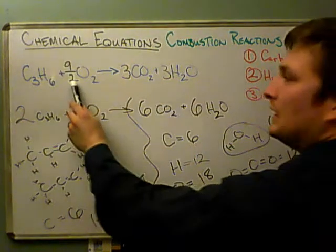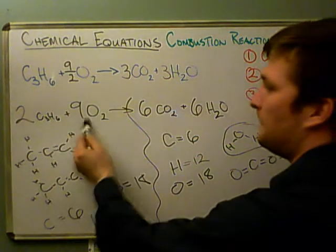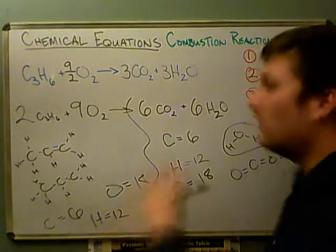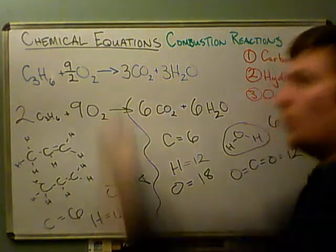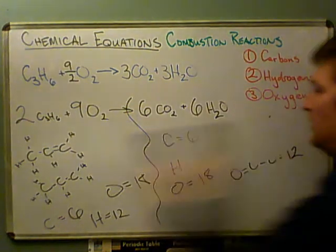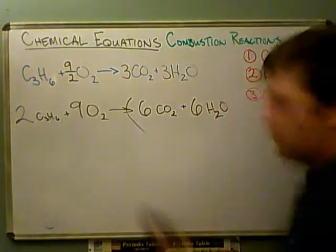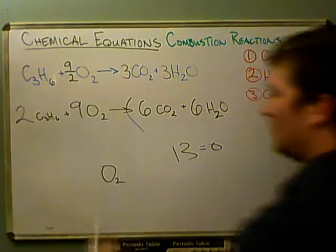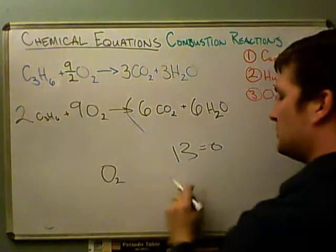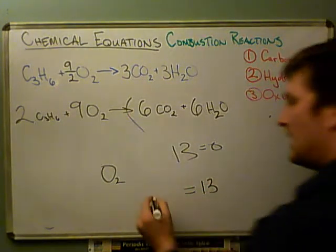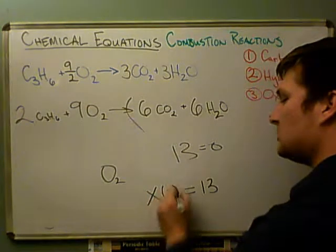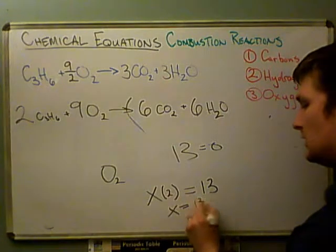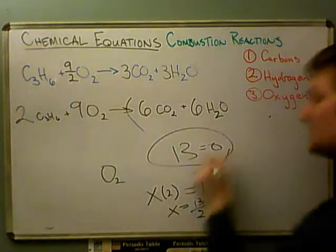So when you run into something like this, make sure you get everything down to single integer coefficients — integers are counting numbers like one, two, three, four. And don't worry when you end up with an odd number of oxygens to balance. For example, if you counted thirteen oxygens needed and you only have O₂ on the other side, just set up x times two equals thirteen, and the coefficient is thirteen halves — then multiply the whole equation by two.